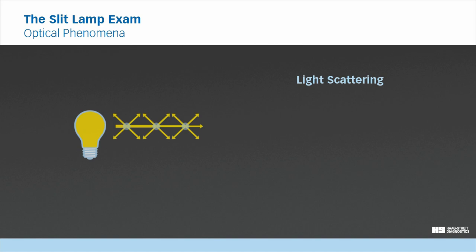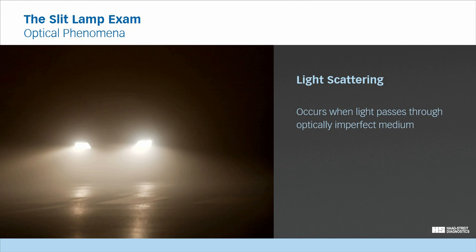Light scattering occurs when light passes through an optically imperfect medium and is deflected from a straight path. This can be observed when a car turns on its headlights in dense fog. The water drops in the air are illuminated by the headlights and scatter the light.